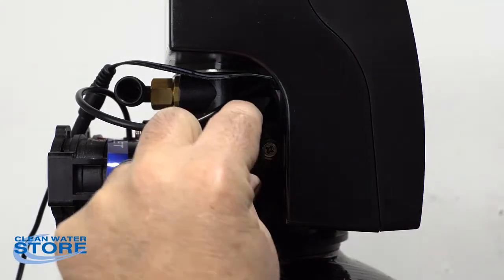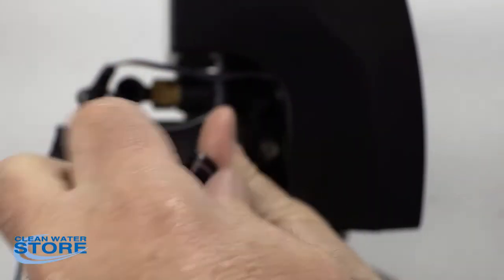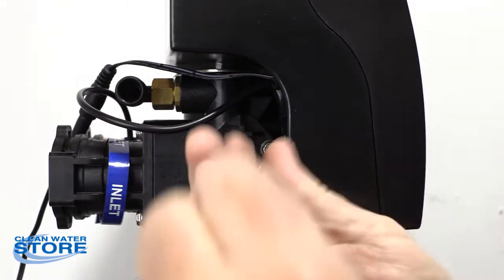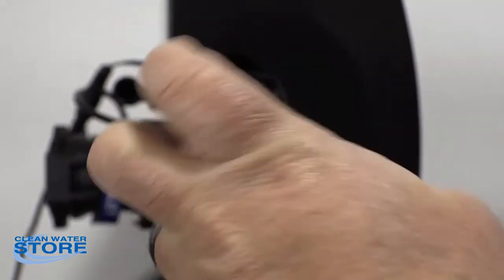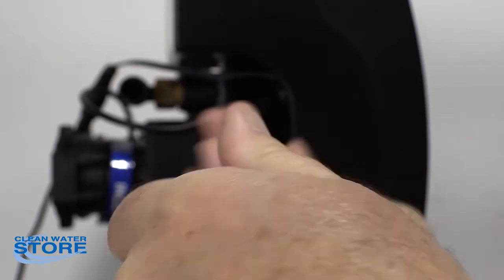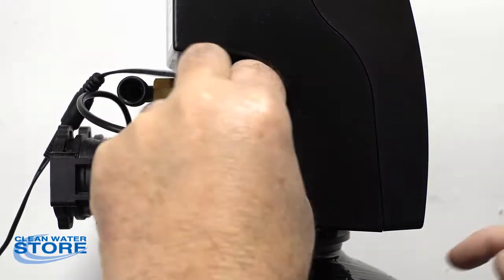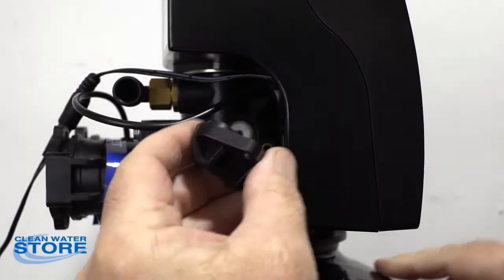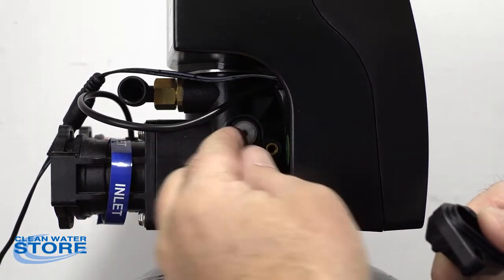So to inspect and clean the brine injector itself, it's behind this little cover here. We're going to go ahead and remove these two screws and pop this cover off.